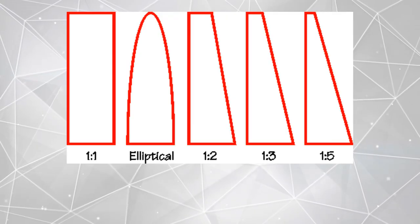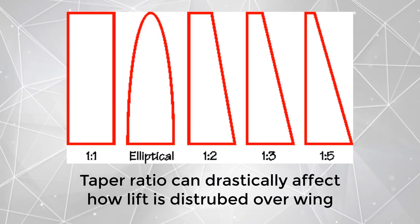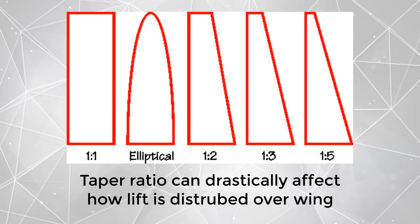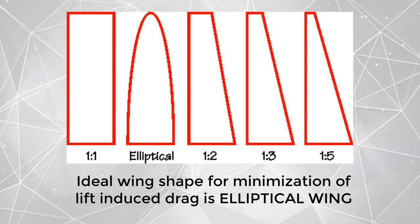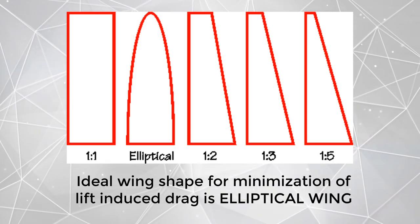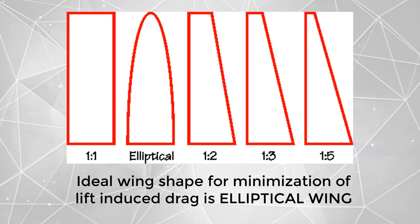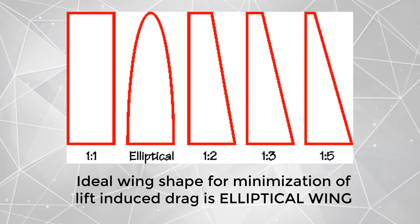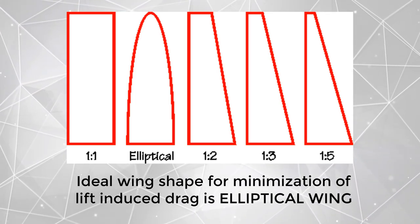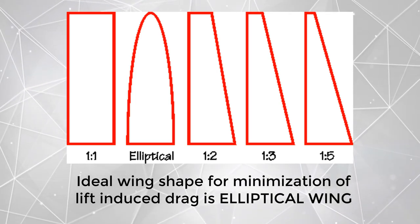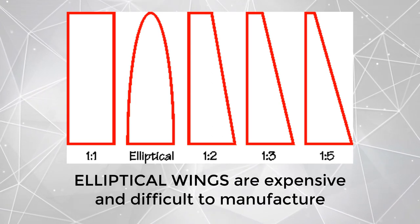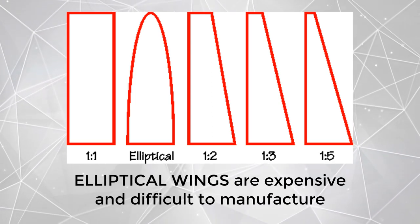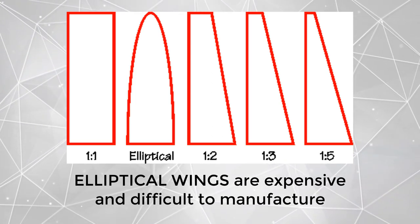Taper ratio. It is the ratio of the tip cord to the root cord. The taper ratio can drastically affect how lift is distributed over the wings. According to Prandtl lifting theory, the ideal wing shape for minimization of lift-induced drag is elliptical. However, elliptical wings are expensive and difficult to manufacture.